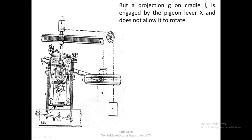But as we have seen, projection G on cradle J — cradle J has a small projection marked G — is engaged by the pigeon lever X, which we shall see now.